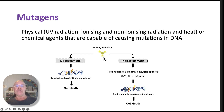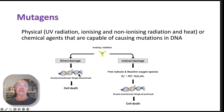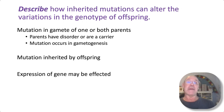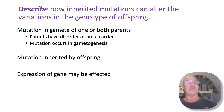Here's an example of how mutagens work: ionising radiation actually causes damage to the backbone of the DNA strands.